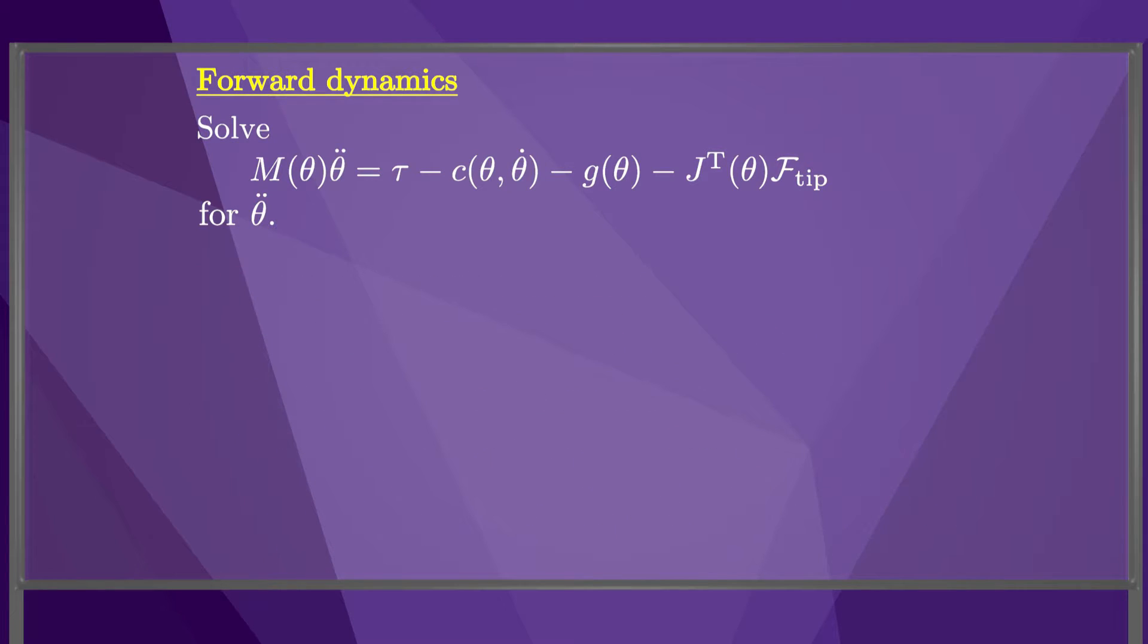Now, referring back to the original problem statement, by calling the inverse dynamics algorithm n plus 1 times, we have the mass matrix M of theta, as well as c of theta theta dot, g of theta, and J transpose times f-tip. We are given tau, so we just need to solve an equation of the form M times theta double dot equals a known vector. We can use any efficient algorithm to solve for theta double dot.